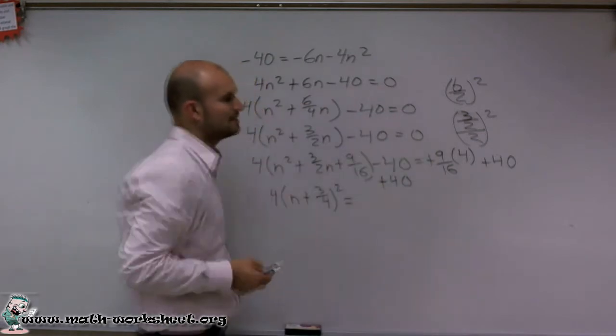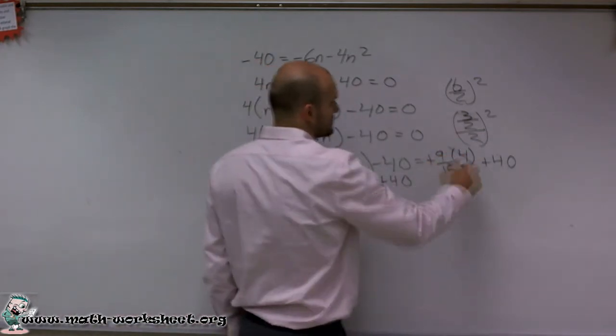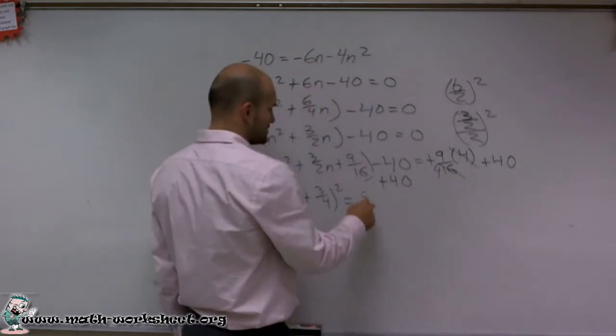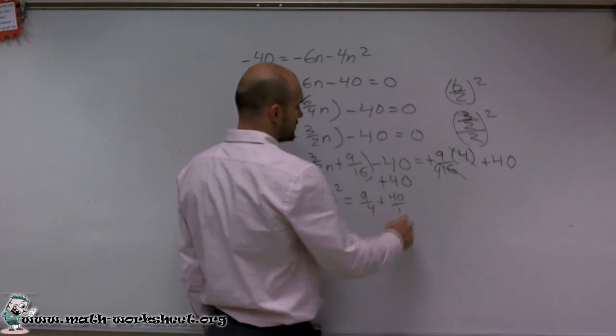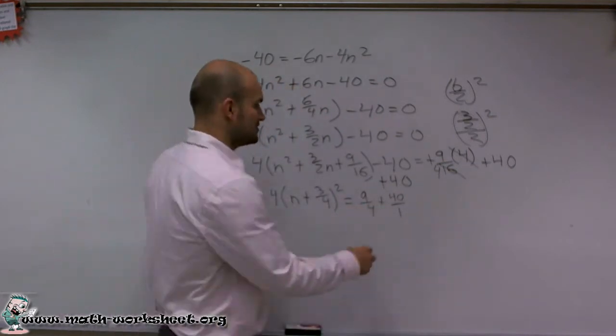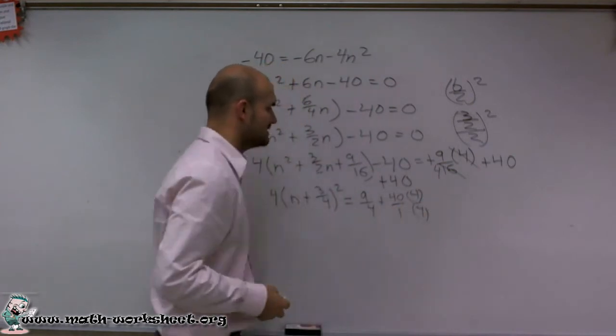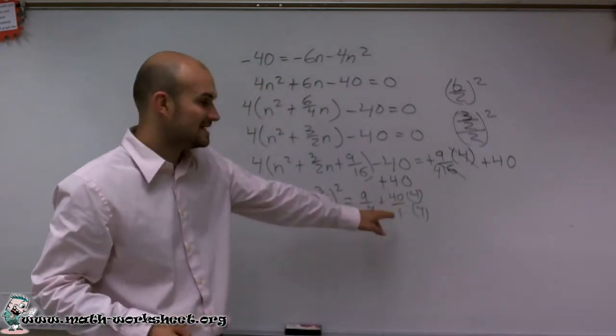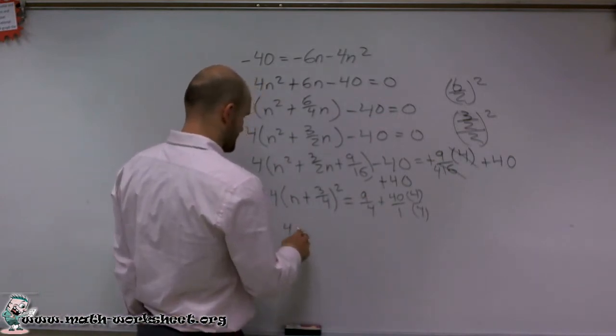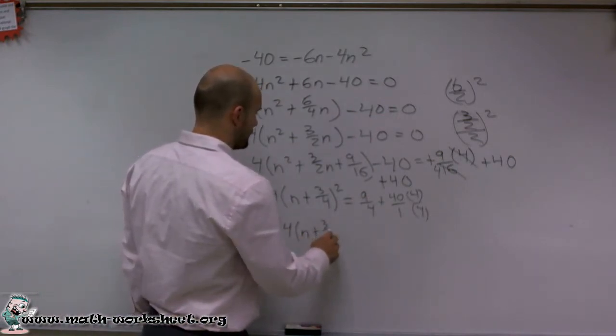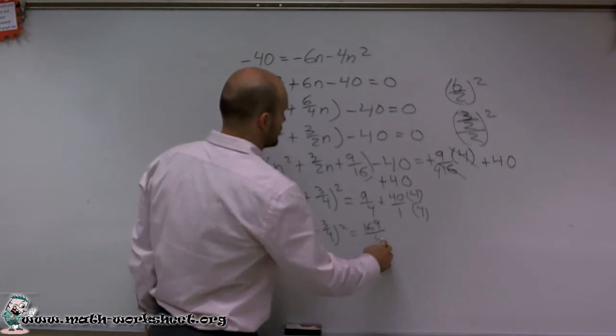Equals, now I need to combine the 9 sixteenths times 4 plus 40. This can be reduced to 9 over 4 plus 40 over 1. I can go and combine those, multiply this by 4 over 4. So that's going to be 160 over 4. So it ends up equaling 4 times n plus 3 fourths squared equals 169 over 4.